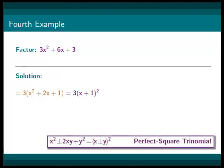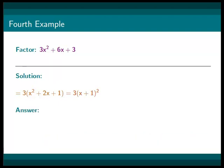Then, we see that we can use the perfect square trinomial rule, which will just give us 3 times x plus 1 squared. So, in conclusion, our final answer is 3 times x plus 1 squared.